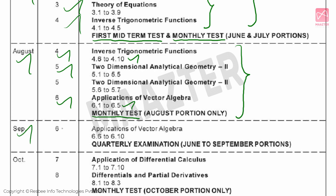Next, September. The remaining portions of Chapter 6 — that is topics 6.6 to 6.10. That month you will have the Quarterly Exam, and the Quarterly Exam covers the June to September portions. We will complete those portions for the Quarterly Exam.